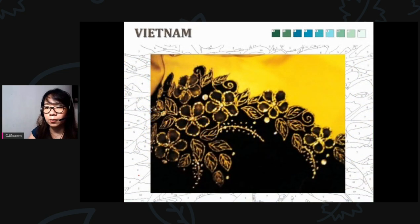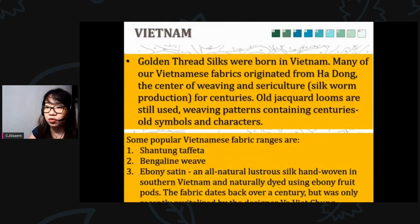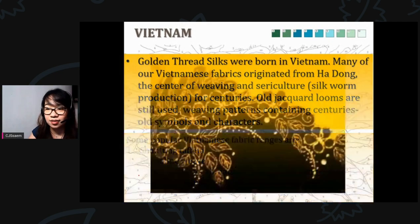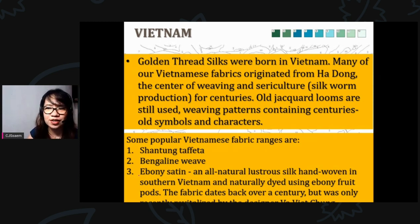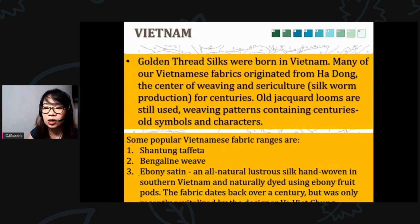From Vietnam: golden thread silks were born in Vietnam, and many Vietnamese fabrics originated from Ha Dong, the center of weaving and sericulture — silk worm production. Four-century-old jacquard looms are still used, weaving patterns containing centuries-old symbols and characters. Popular Vietnamese fabric ranges include shantung, taffeta, bengaline weave, ebony satin, and all-natural lustrous silk hand-woven in southern Vietnam.